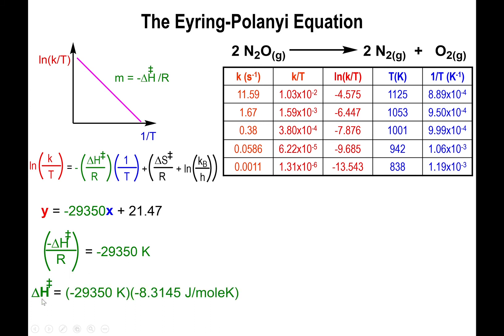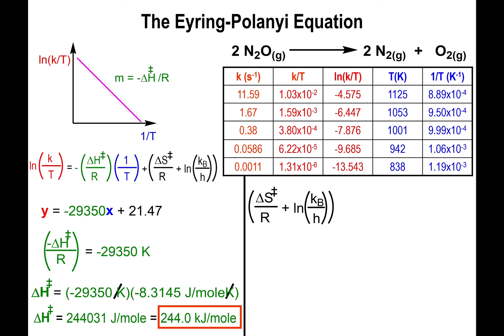Originally it will be in joules per mole. Divide this value by a thousand so that you get it in kilojoules per mole. That's the first thing.